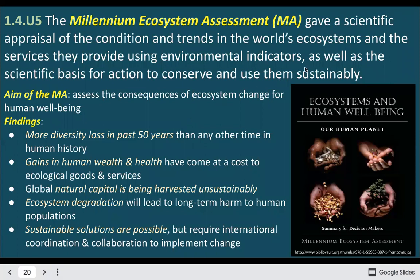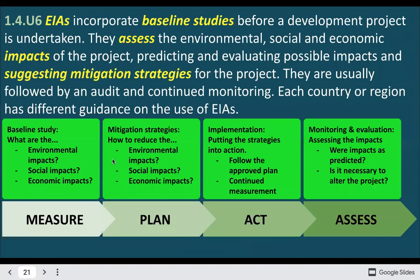That Millennium Ecosystem Assessment gave us an overall appraisal of the trends in the world's ecosystems, and it's not been very good. There's been a huge loss in biodiversity in the past 50 years. We've gained a lot in human health and wealth, but we've lost a lot of those natural systems. Some reports suggest upwards of 95 percent of the world's natural ecosystems have been changed in some way, mostly for human development.